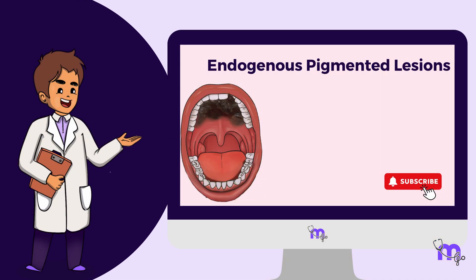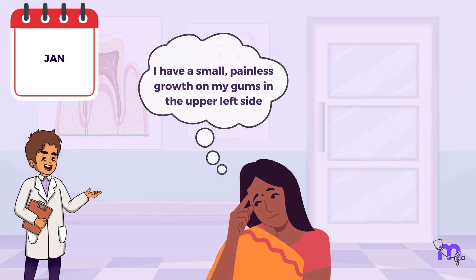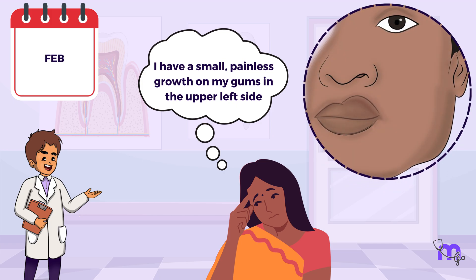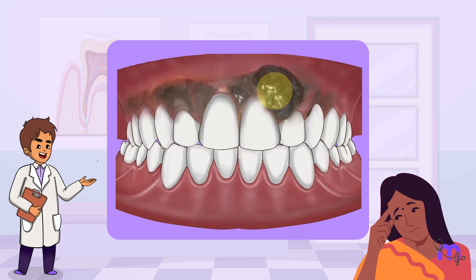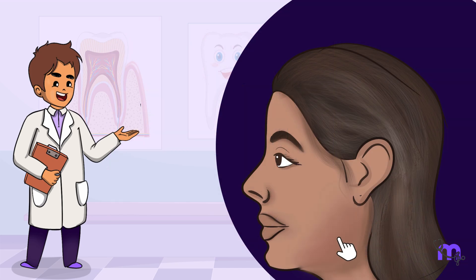Today's video discusses a few important endogenous pigmented lesions and their characteristic features with an interesting case scenario. A 55-year-old female noticed a painless growth on her left anterior maxillary gingiva for three months. It started small and progressed gradually, extending to the palatal gingival margin. She had a tender, solitary left submandibular lymph node which was firm and fixed to the lower border of the mandible.